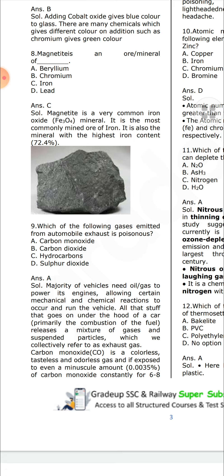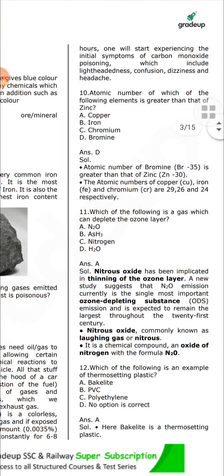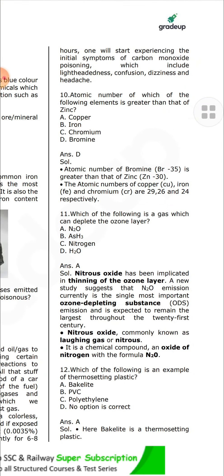Carbon monoxide is a colorless, tasteless, and odorless gas. Exposure to even a small amount — 0.0035 percent of carbon monoxide — constantly for six to eight hours will cause one to start experiencing initial symptoms of carbon monoxide poisoning, which include lightheadedness, confusion, dizziness, and headache.